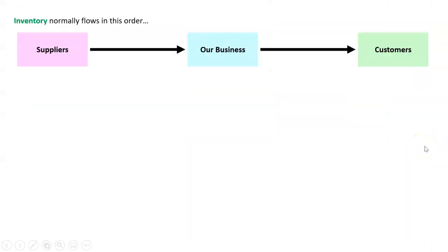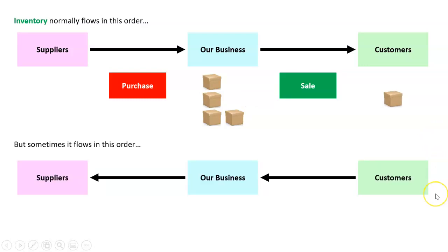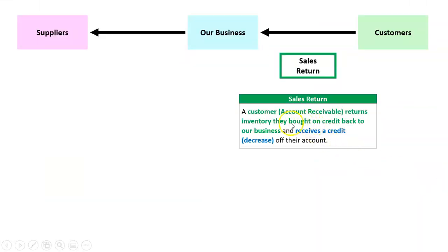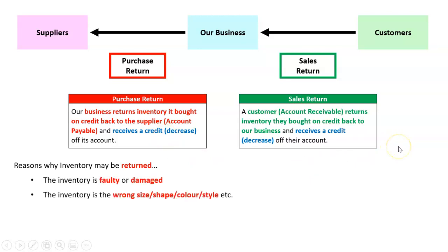What is a return? Inventory normally flows in this order: suppliers sell to our business — that's called a purchase — and we sell to customers — that's called a sale. When that order is reversed, a customer returning to our business is called a sales return, and us returning to the supplier is called a purchase return. A sales return is when a customer returns inventory bought on credit and receives a credit off their account. A purchase return is when our business returns inventory to the supplier, reducing our accounts payable.